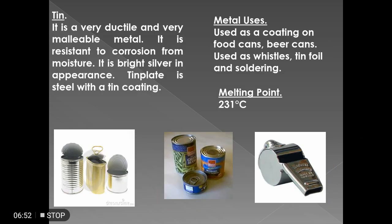Next is tin. It is a very ductile and malleable metal, resistant to corrosion from moisture. It is bright silver in appearance. Tin plate is steel with a tin coating. Its applications include use as a coating on food cans, beer cans, whistles, tin foil, and soldering. Its melting point is 231 degrees Celsius — it is very low, that's why it is used for soldering.